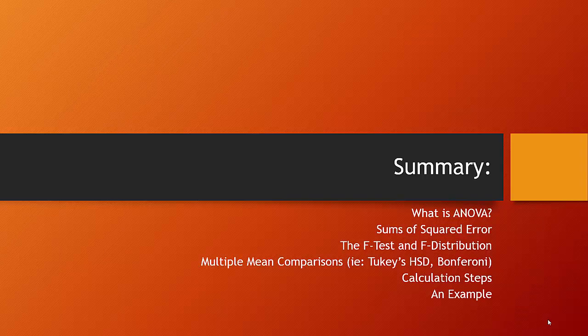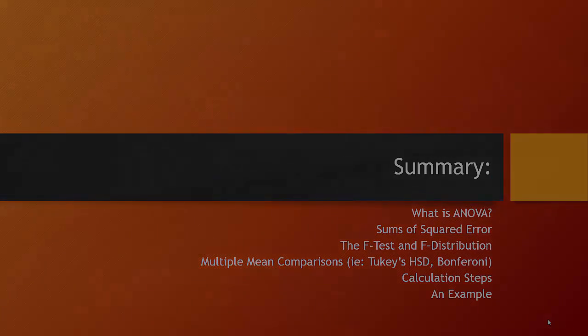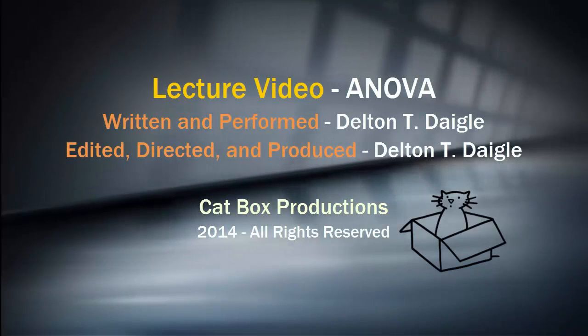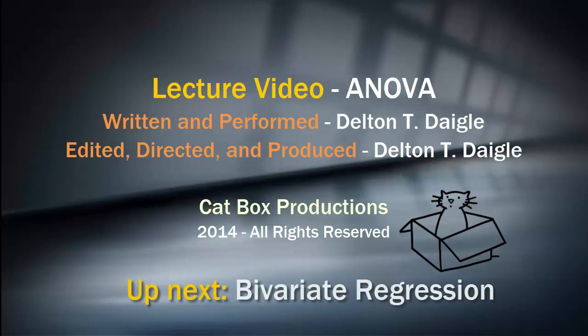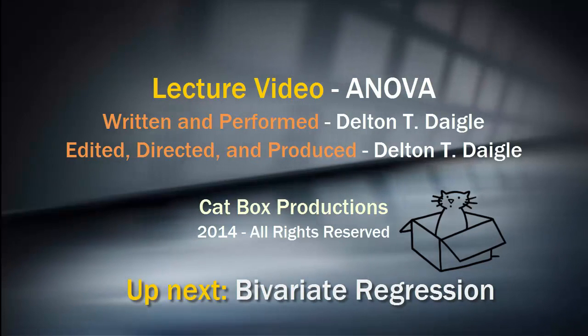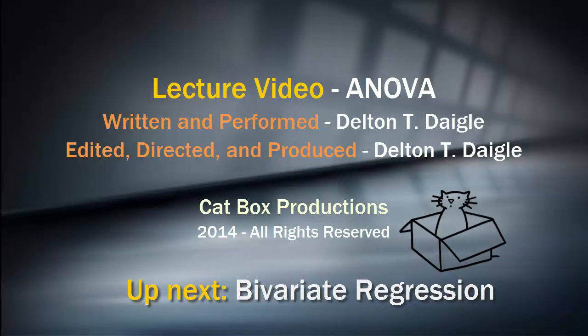Here's what we've covered: we discussed what ANOVA is, considered the sums of squared error and what they mean, looked at the F-test and the F-distribution, examined multiple mean comparisons, walked through the calculation steps, and did an example. Before moving on to the next lecture video on regression, be sure to do the lab video for ANOVA, which will teach you how to use ANOVA with SPSS. See you soon.